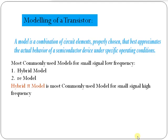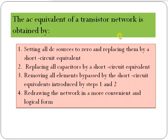To obtain an AC equivalent circuit of a transistor network, the following steps are used. First, set all DC sources to zero and replace them with a short circuit equivalent. Second, replace all capacitors with a short circuit equivalent. Third, remove all elements that are bypassed by the short circuit equivalents introduced in steps one and two. Fourth, redraw the network in a more convenient and logical form.